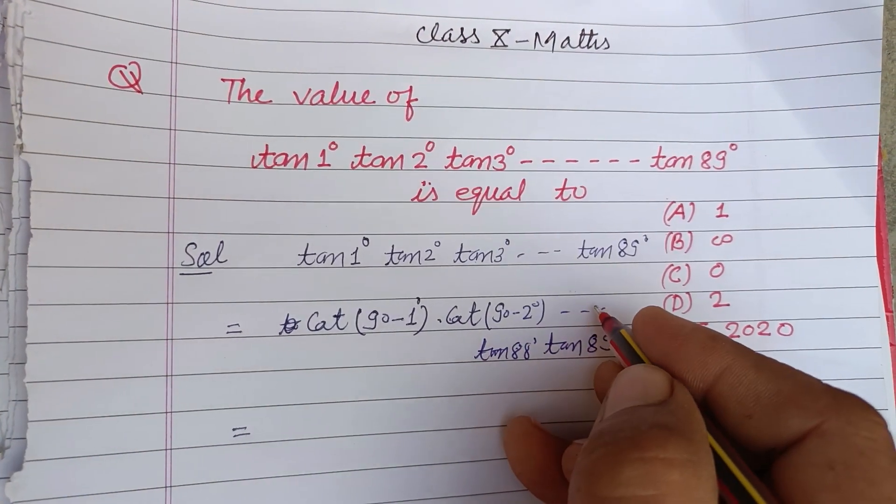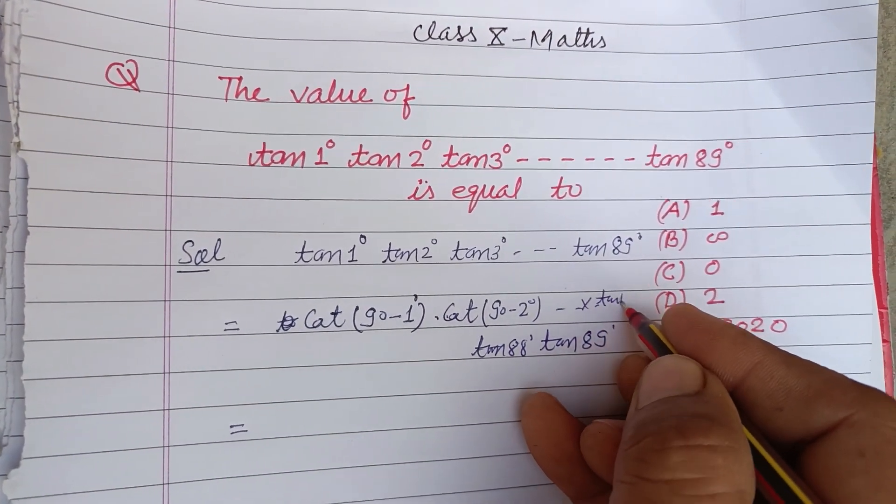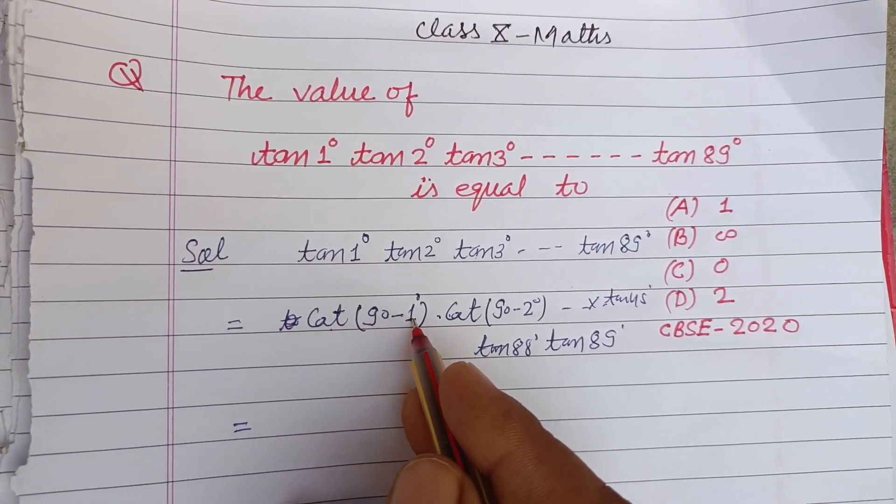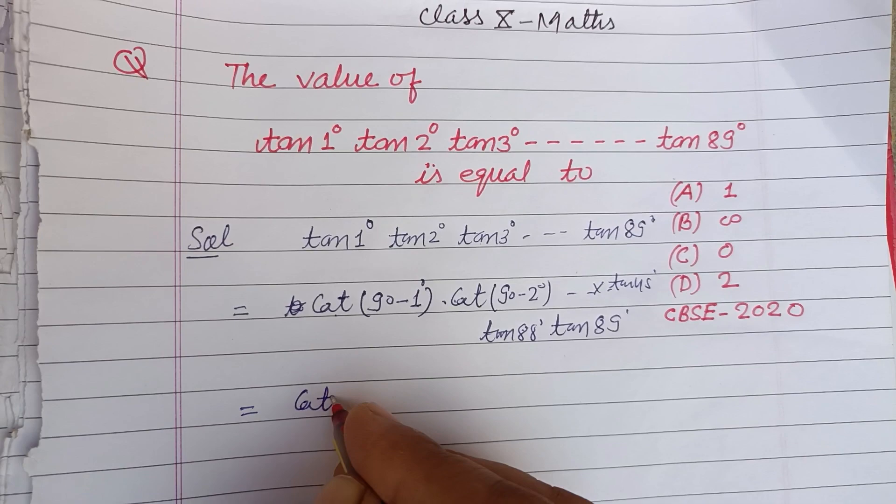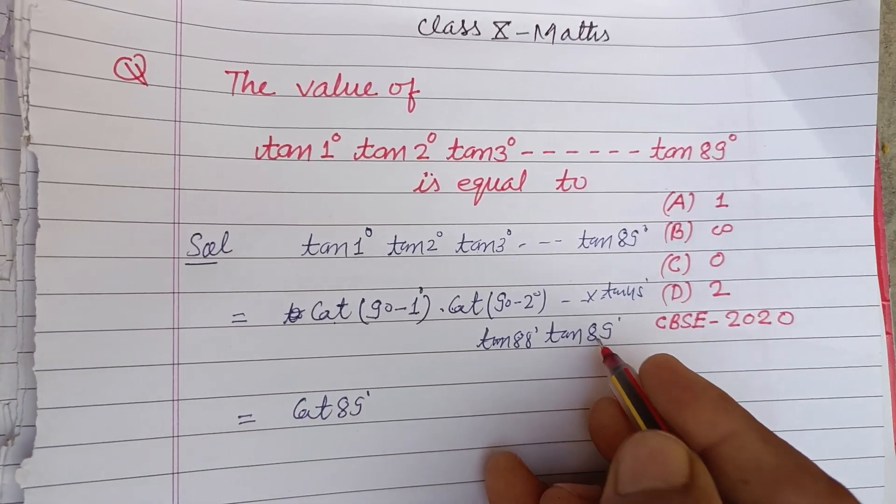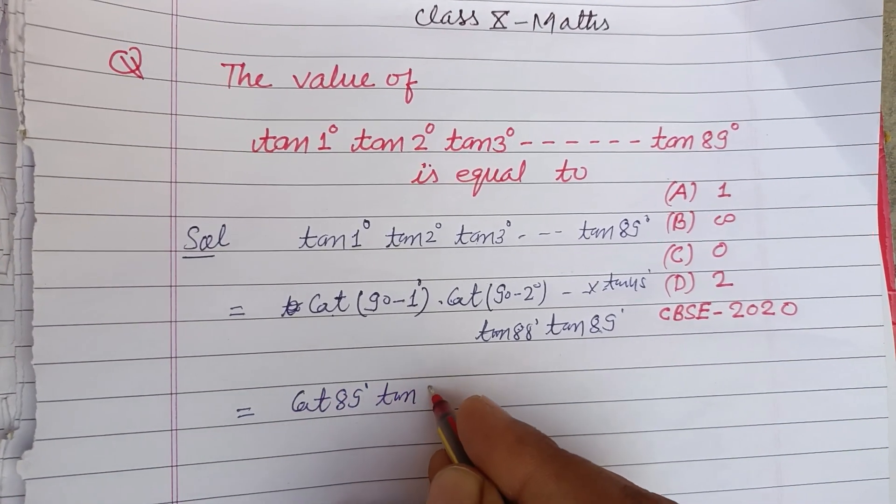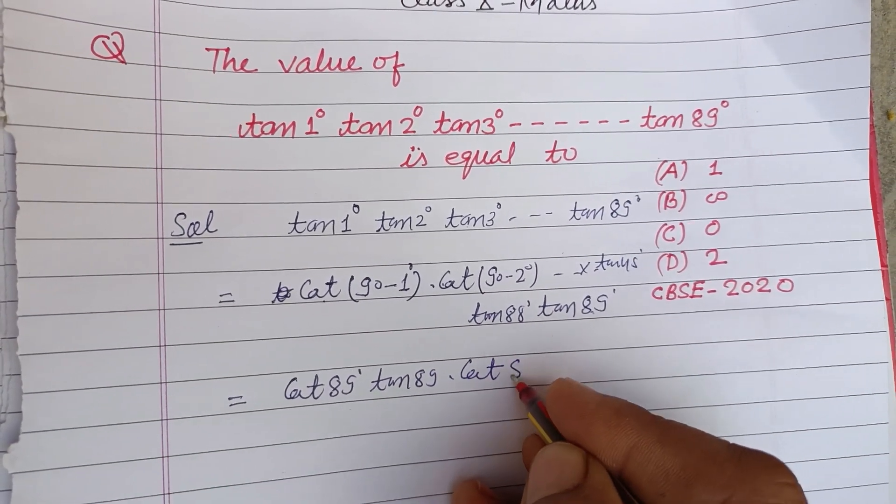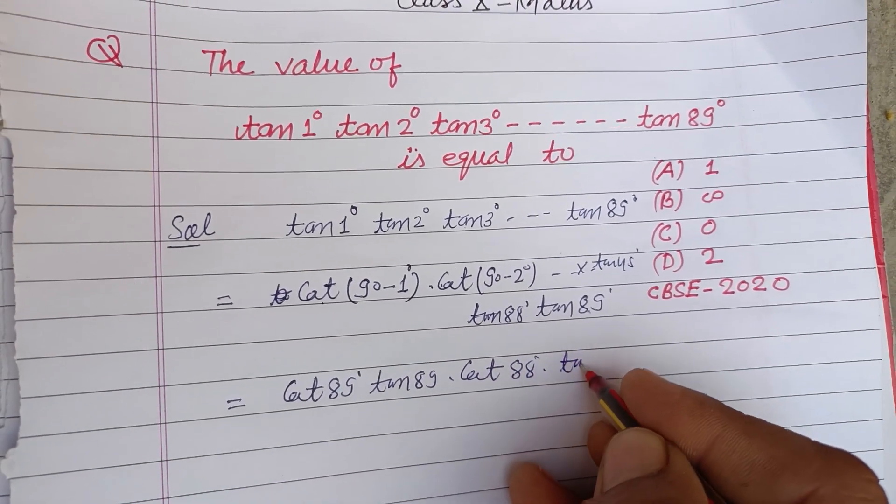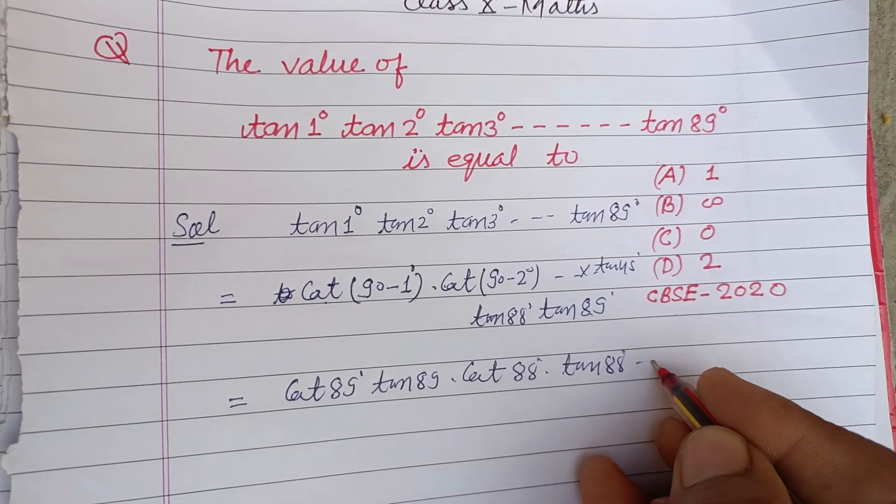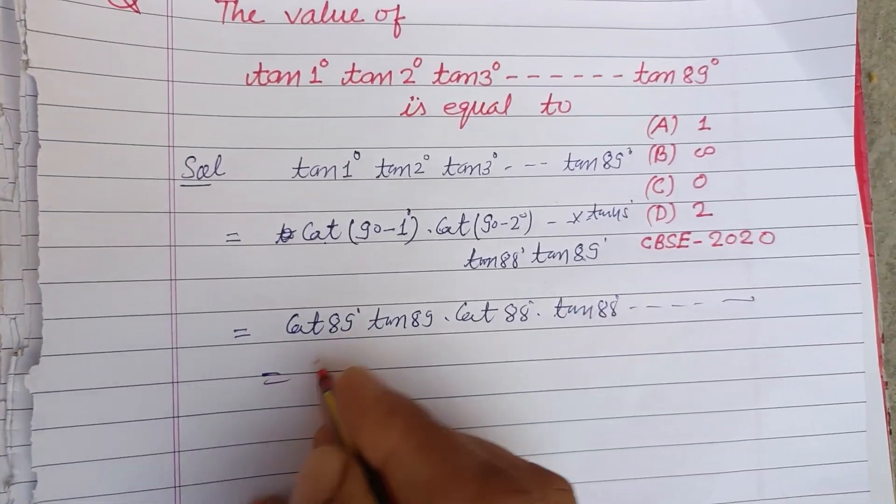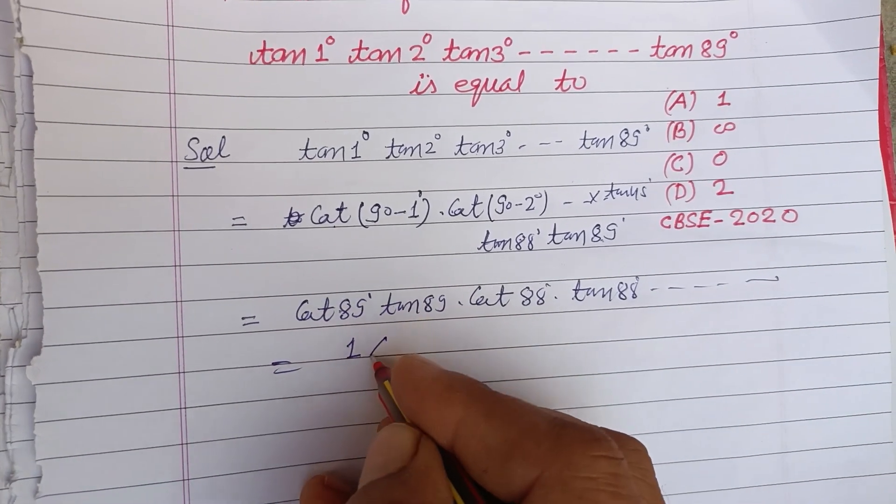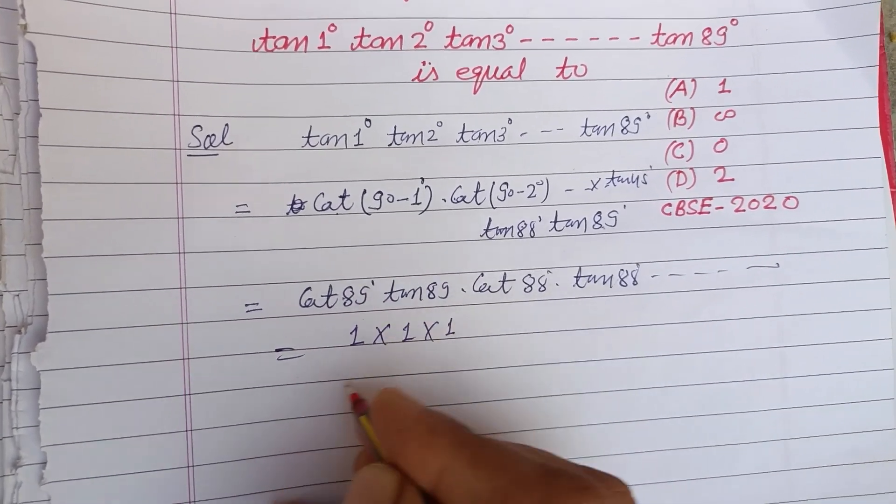So similarly in this way tan45° also comes. So the value of cot(90° - 1°), this is cot89° × tan89°, cot88° × tan88°. Similarly in this way all products become—these are the inverse of each other, therefore the product is always